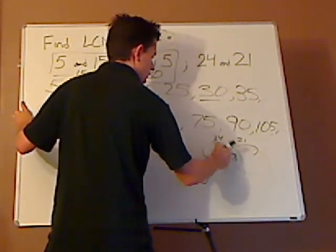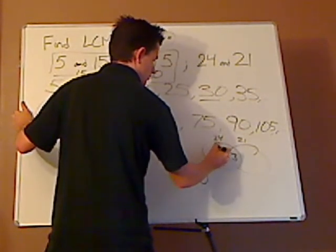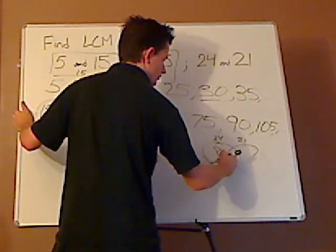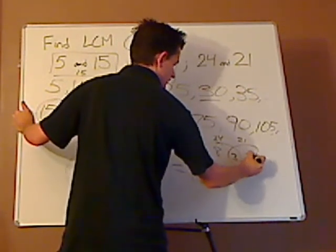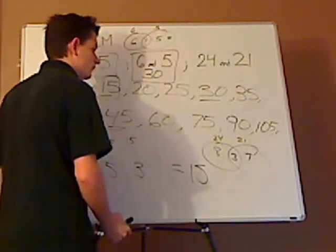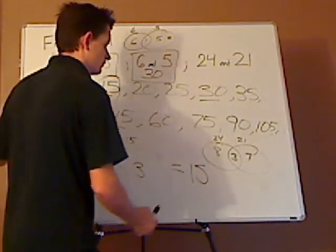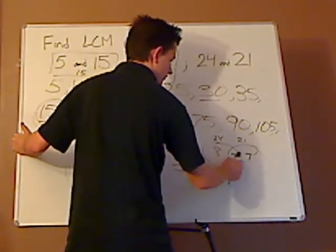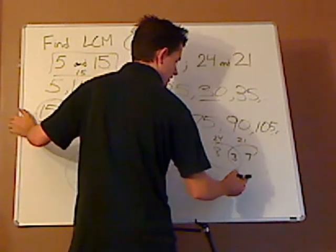What times 3 will give you 24? Yep, 8. What times 3 will give you 21? 7. So then I have 21 times 8, right? Or 24 times 7. Either which way.